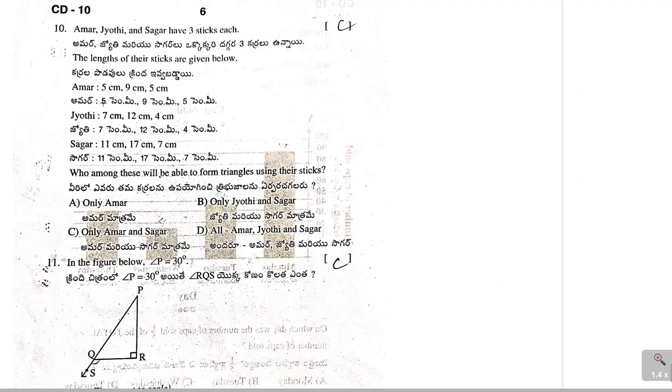Let us go to the next one. Amar, Jyoti and Sagar have 3 sticks each. The lengths of their sticks are given below. Who among these will be able to form triangle using their sticks? To form a triangle, we need to use triangle inequalities. We know that if we have a triangle, sum of any two sides must be greater than the third side.